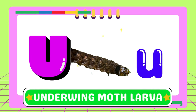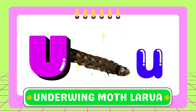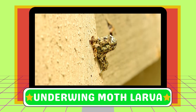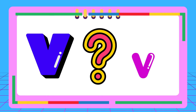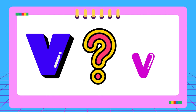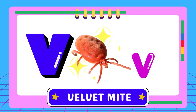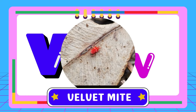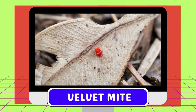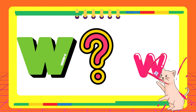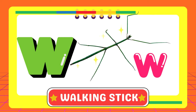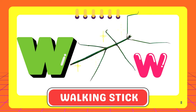U — U for underwing moth larvae. V — V for velvet mite. W — W for walking stick.